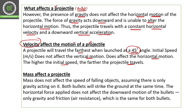Now, mass does not affect the speed of falling of an object, assuming there is only gravity acting on it. So mass doesn't have much effect here. Both a heavy bullet and a lighter bullet will strike the ground at the same time. Mass doesn't have much effect — both bullets will experience equal gravity and both will touch the ground at the same time.